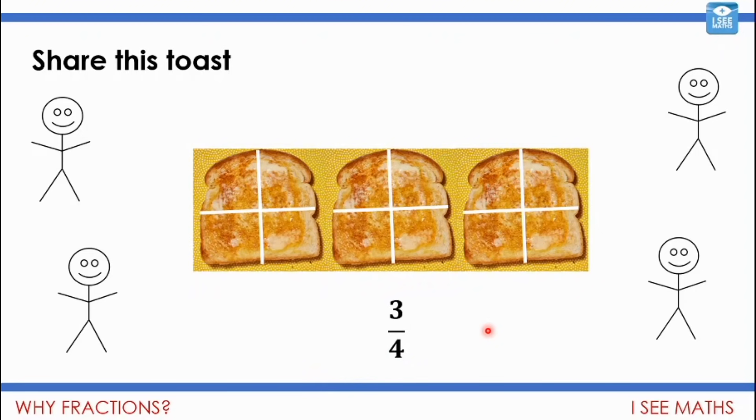Or maybe instead, you did this. You split each piece of toast into quarters. And so it's almost like you thought, well, each person has a quarter of this one, and a quarter of this one, and a quarter of this one. So in total, they have three quarters. So there, those two ways, this way and this way, we end up with the same amount of toast. We end up with three quarters.